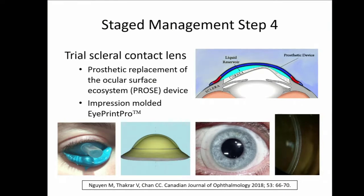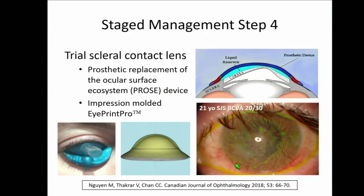Step four: scleral contact lenses have really revolutionized how I manage these patients. Often this is where we can actually stop and not need to go further. The two most common ones I currently use are the PROSE device and an impression-molded iPrint Pro lens — we published the first series on this. It's a molded device that fits onto the eye surface, goes to 3D printing, and ends up looking like a scleral contact lens. One patient with Stevens-Johnson, monocular and only 21 years old, achieved best-corrected vision of 20/30. He did not need stem cell transplantation or systemic immunosuppression, and has been stable under my care for the last ten years.